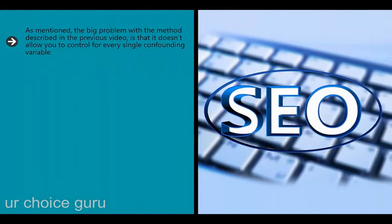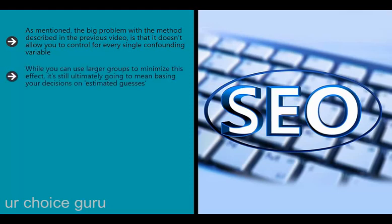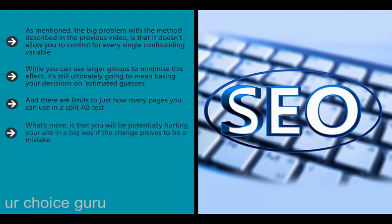The big problem with the matched pages method is that it doesn't allow you to control for every confounding variable - the pages are still different pages and might succeed or fail based on other factors. There are also limits to how many pages you can use in a split A/B test, and changing results across hundreds of pages involves a lot of work. The whole point of A/B testing is to conduct the experiment in a controlled manner. One answer is to use a redirect, which sends visitors to a different version of the website.